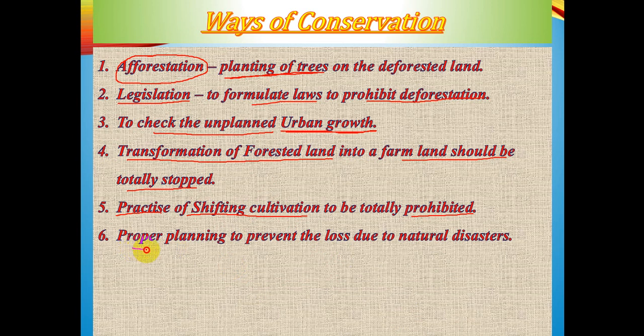The sixth way is planning to prevent loss due to natural disasters. While we cannot stop natural disasters, we can create strategies and mitigation plans — signs, symbols, and emergency responses — to reduce forest loss due to forest fires and floods.